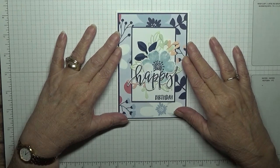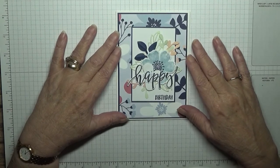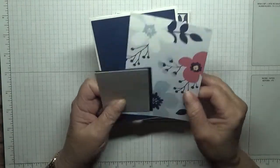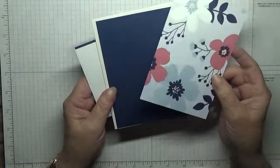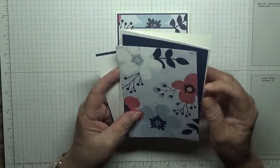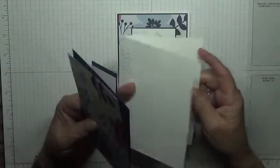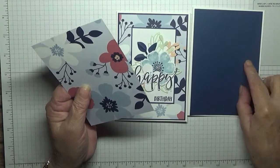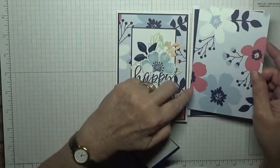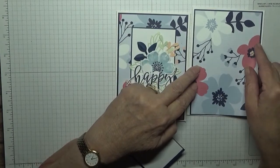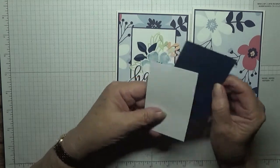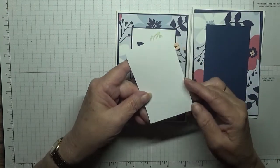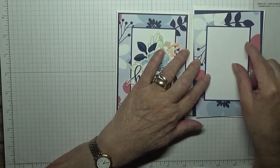To make this card, I've got a card blank of 8 and a quarter by 5 and seven eighths, scored at 4 and one eighth, a piece of navy card at 5 and five eighths by 3 and seven eighths, a piece of DSP at 5 and a half by 3 and three quarters, a piece of navy at 2 and a half inches by 4 inches, and a piece of white at 2 and three eighths by 3 and seven eighths.